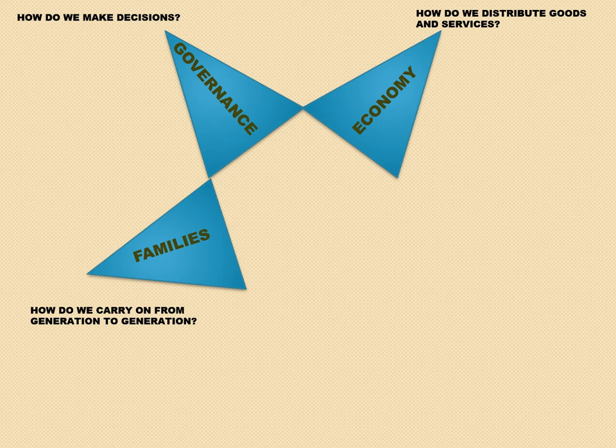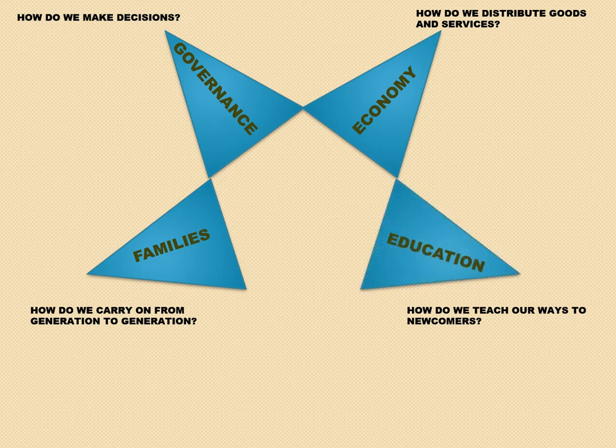As we meet other societies, as populations regrow and people move around, we have to teach our ways to newcomers — passing that information from generation to generation. We call that education. But don't think only of formal education. The answer to 'how do we teach newcomers' can be anything from mentoring, to sitting around a campfire, to telling stories, to rituals. Newcomers can be immigrants or simply children.